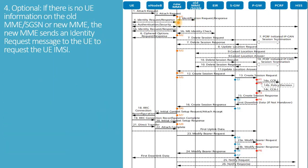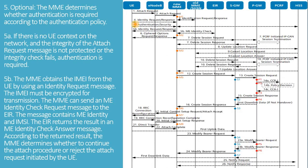Optionally, if there is no UE information on the old MME/SGSN or new MME, the new MME sends an identity request message to the UE to request the UE IMSI. Optionally, the MME determines whether authentication is required according to the authentication policy. If there is no UE context on the network and the integrity of the attach request message is not protected, or the integrity check fails, authentication is required. Note that authentication is a complete set of signaling messages exchanged between UE, MME, and HSS.